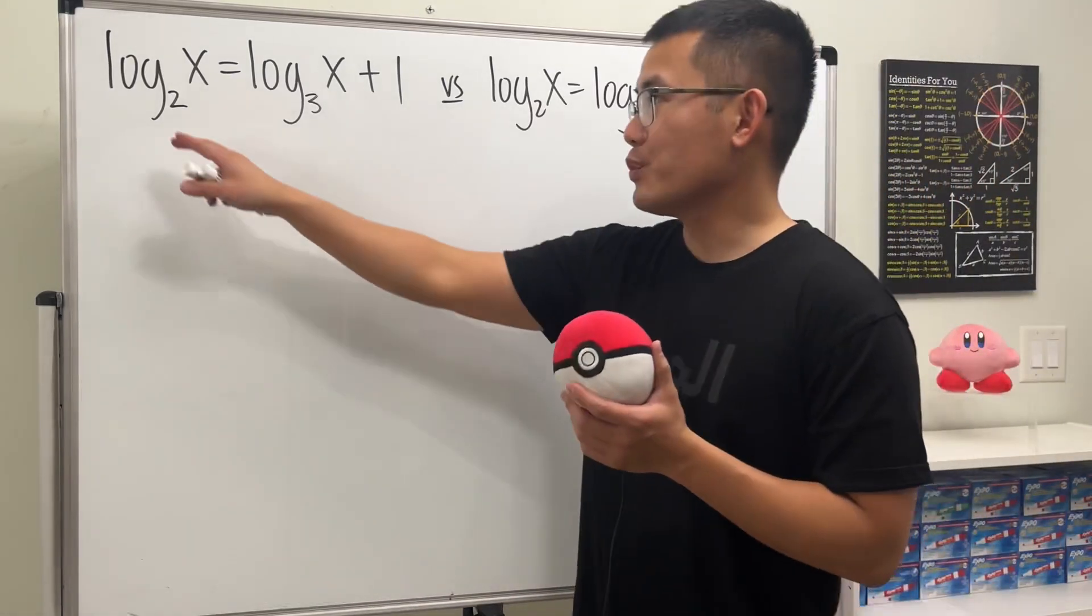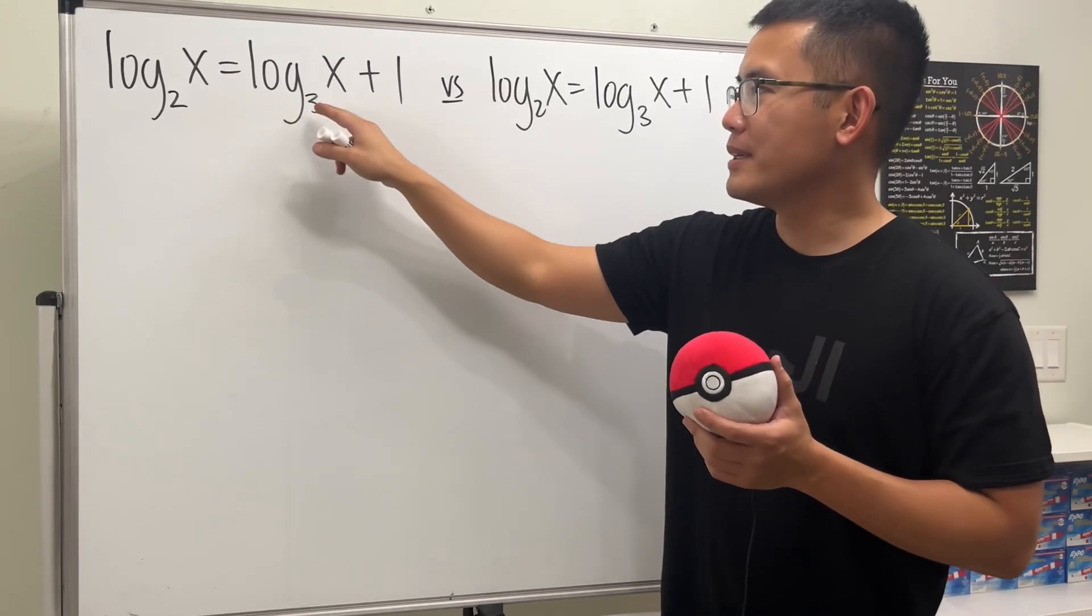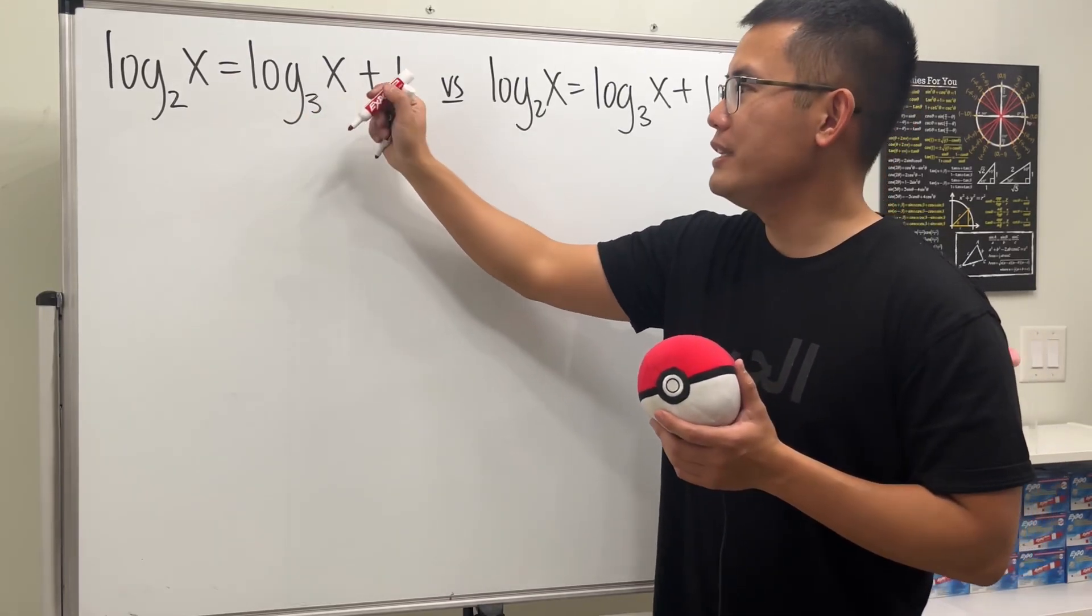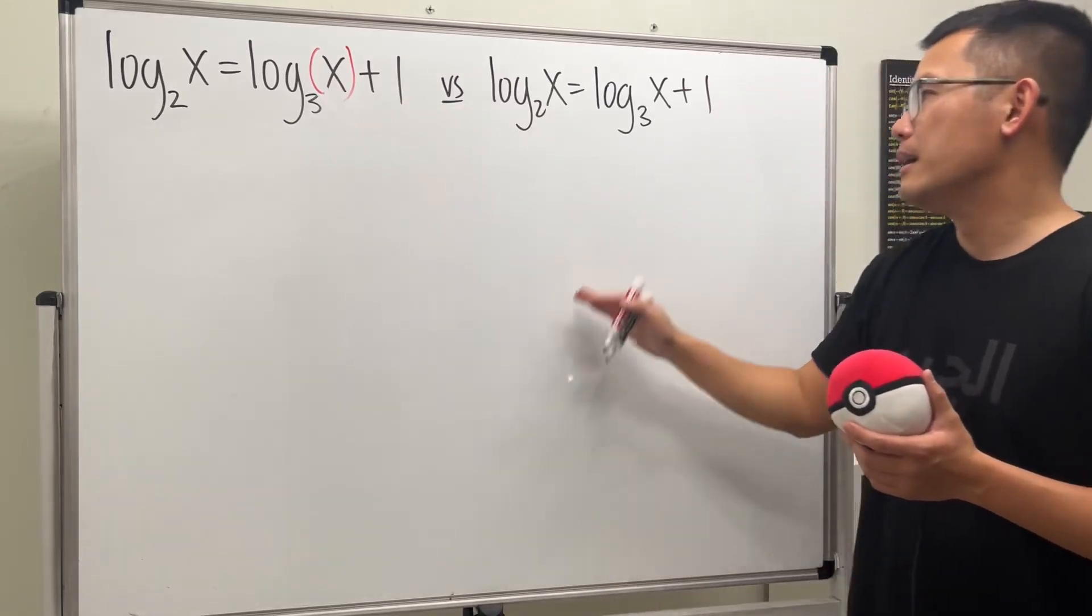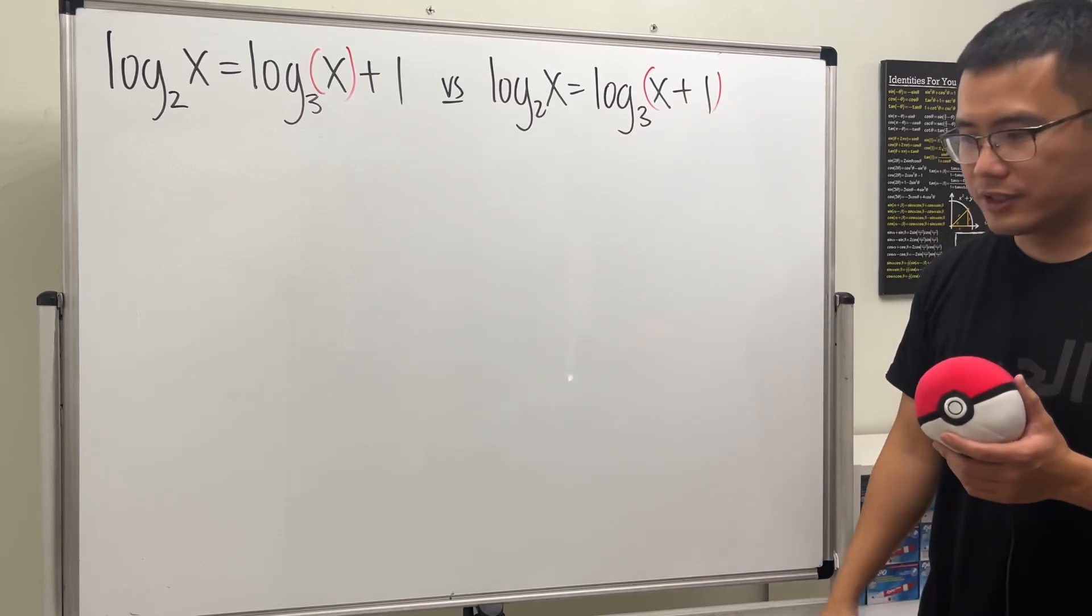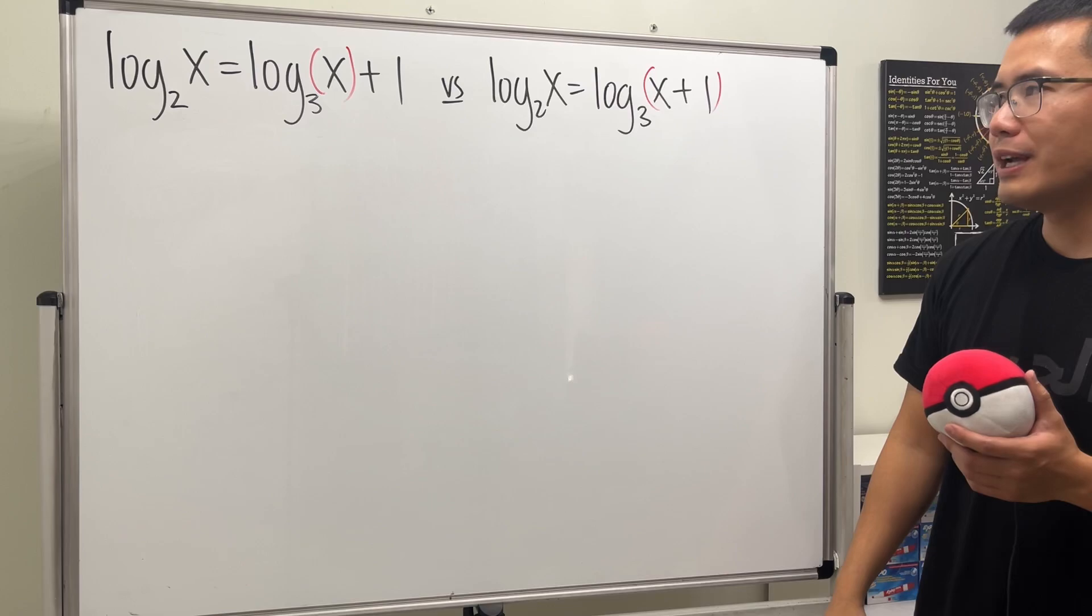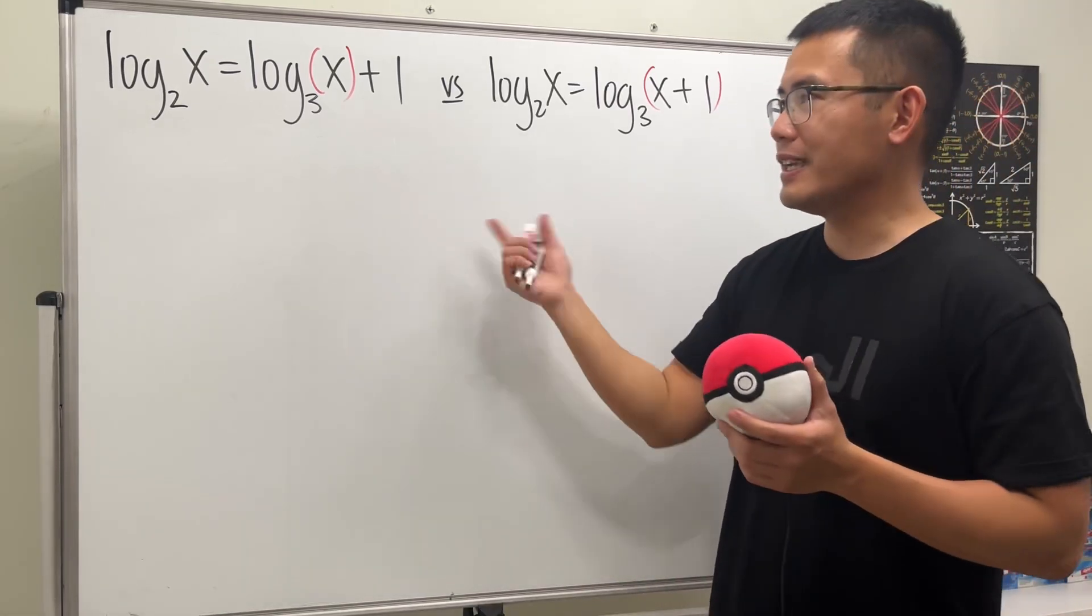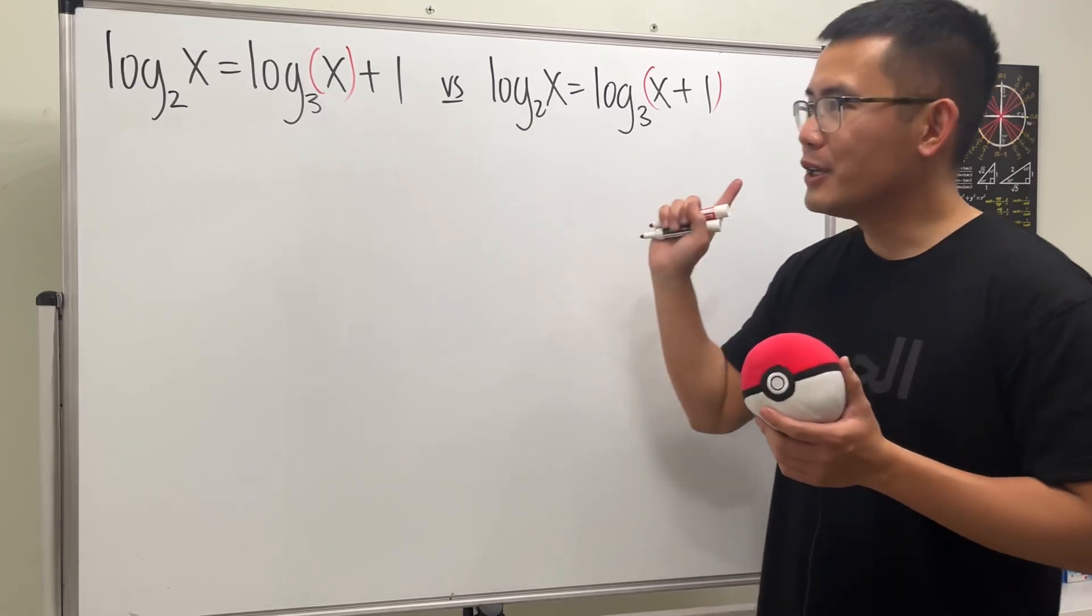So I'll have a look right here. For this one, we have log base 2 of x, and that's equal to log base 3. And I'm just going to put the x right here inside of the log, and this plus 1 is on the outside. But for this right here, I'm going to put both the x plus 1 for this logarithm. And let me just tell you, in fact, one of them, I do not know how to solve it legitimately. Of course, I know the answers, though. But anyway, please pause the video and try them first.